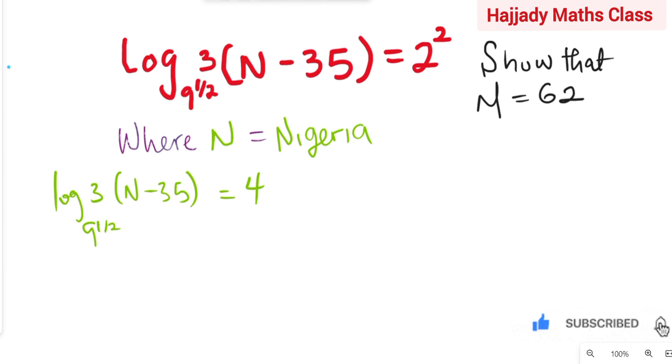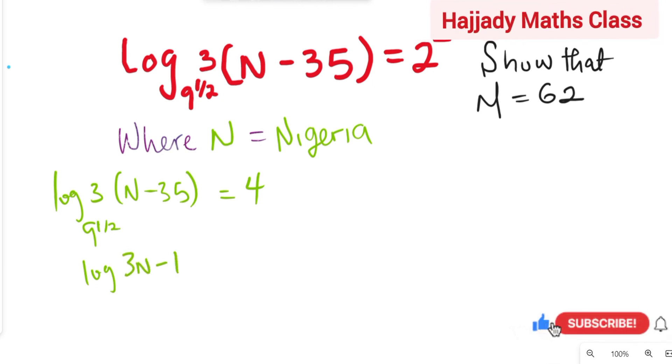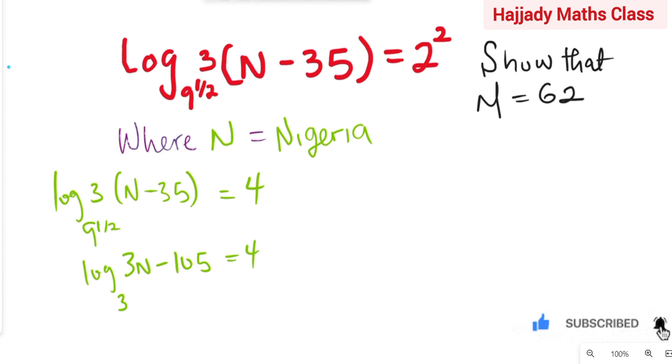So, the next line is for us to have log. You can distribute this bracket, which is going to give you 3N minus 3 times 35 is going to give us 105 equals 4. And the base, which is the same thing as 3 raised to power 2 times 1 over 2.